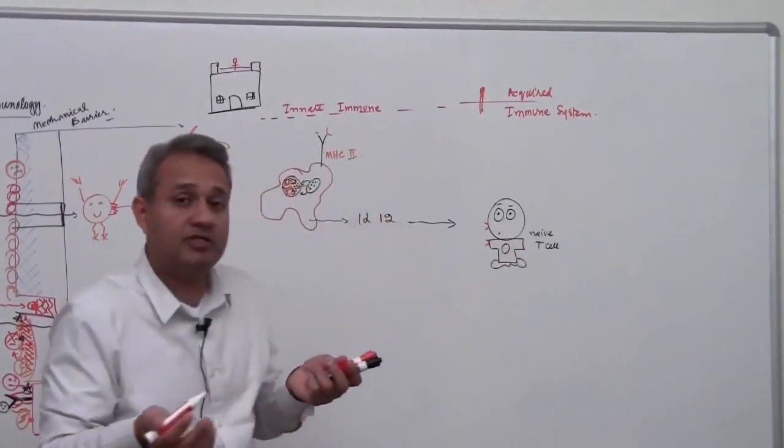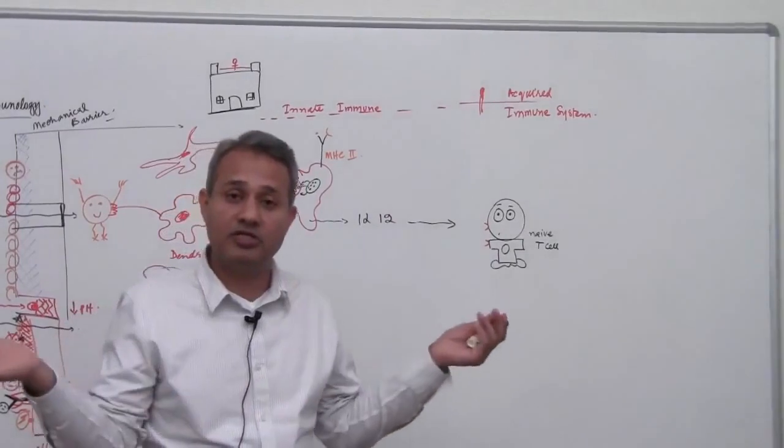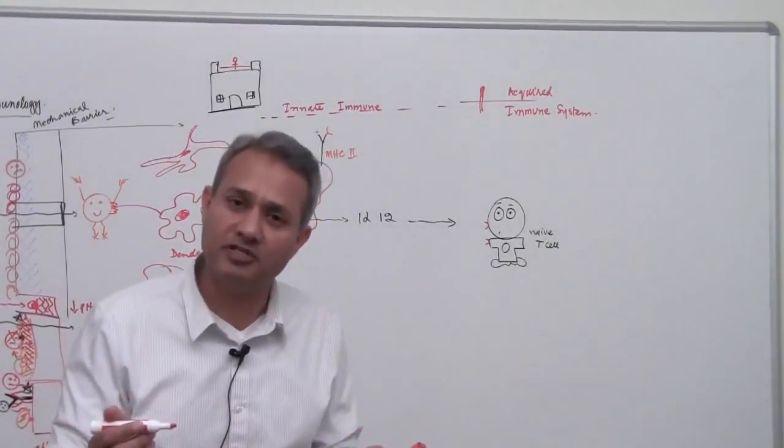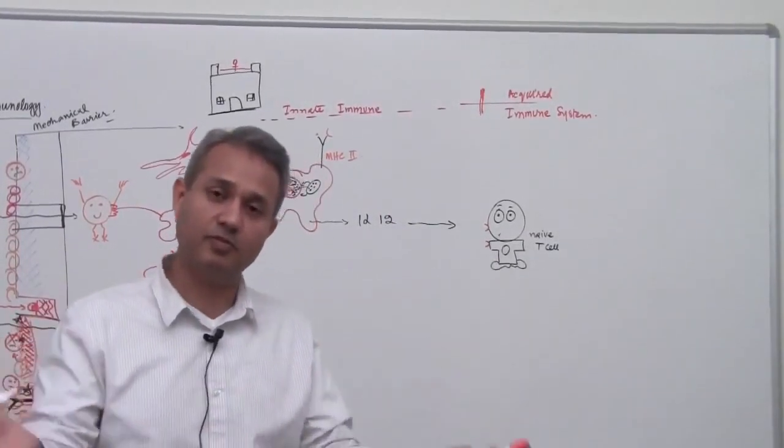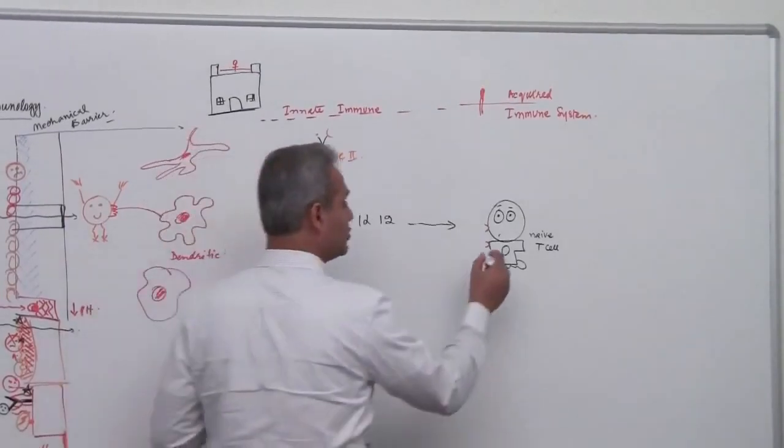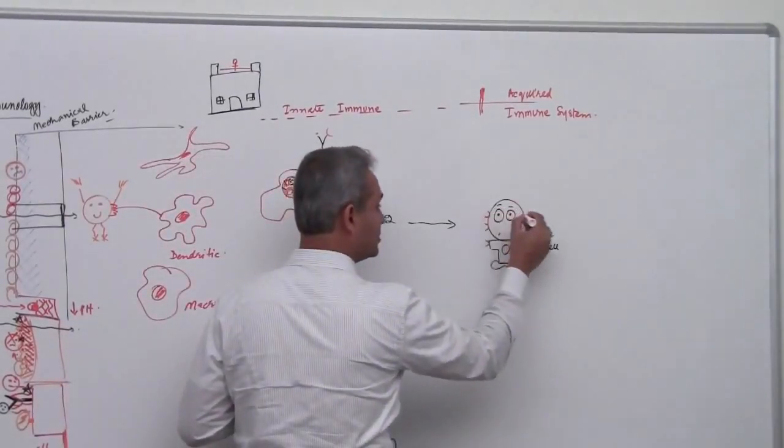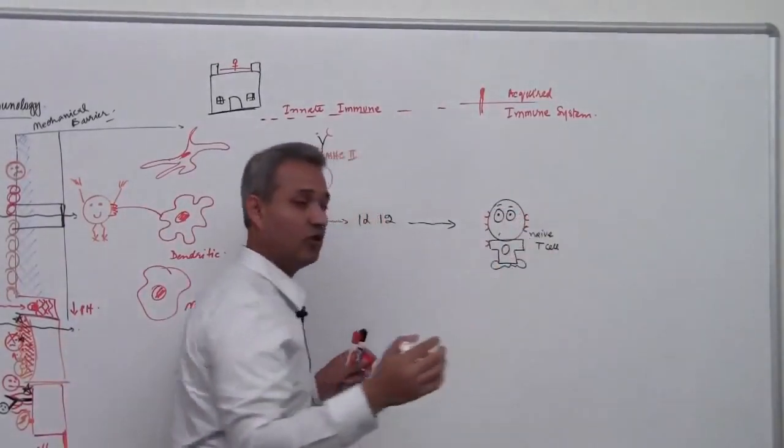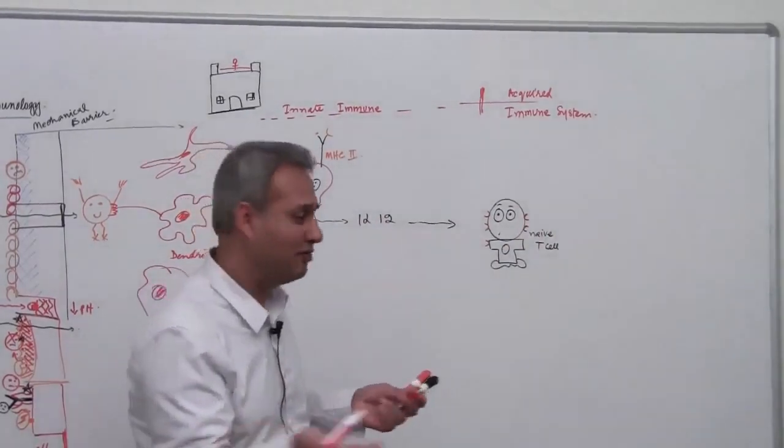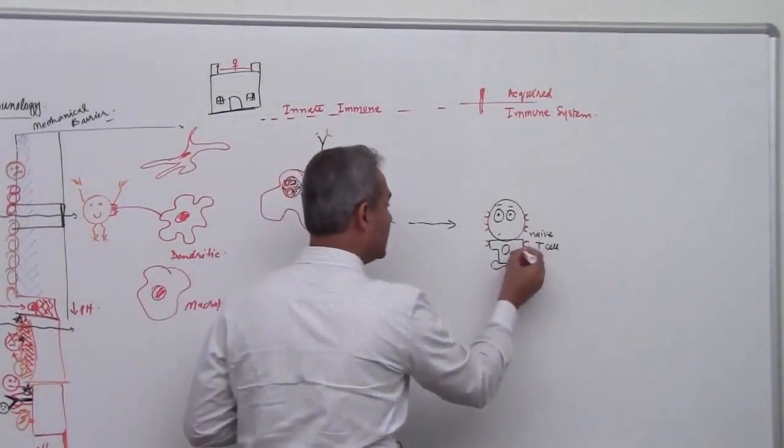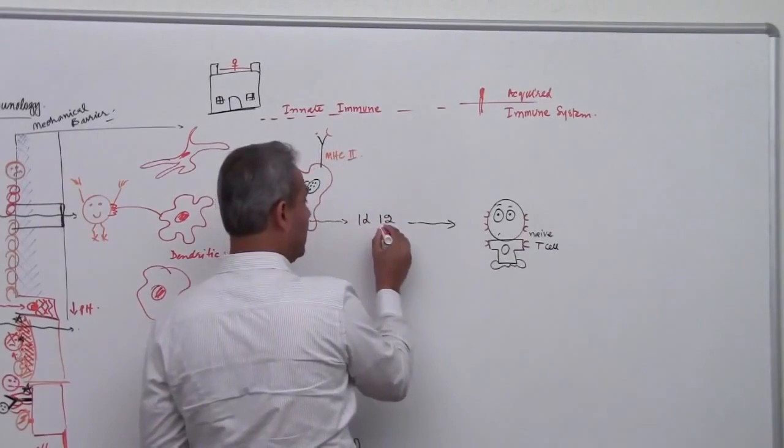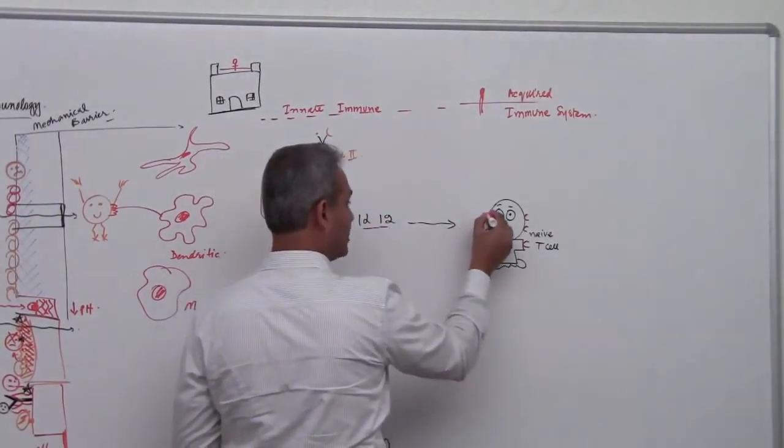So he is the guy who does not know what is his function in the world. So he is asking everyone, hey what is my function in this life, what am I supposed to do? So he is showing receptors, so he is all ears, he is listening to everyone. So he is showing receptors which would allow the IL-12 to come and attach.